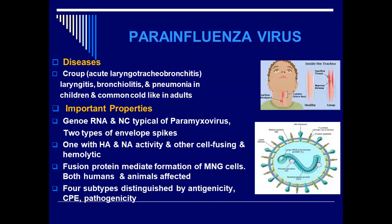The parainfluenza virus is responsible for a disease known as acute laryngeal tracheobronchitis, called croup. There are three key components of the respiratory system involved: the larynx, which is the voice box; the trachea, which is the windpipe; and the bronchi. So the collective name for the disease is croup, which is a combination of laryngitis, tracheitis, and bronchitis.